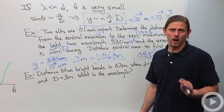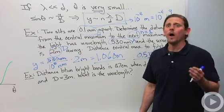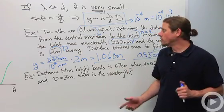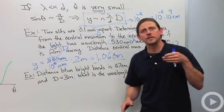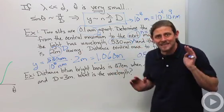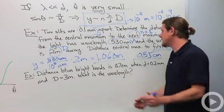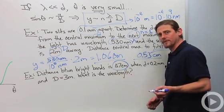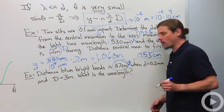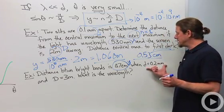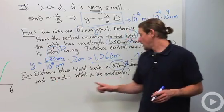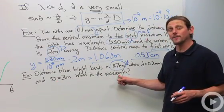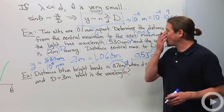Let's do the next one. This is actually what the double slit experiment is used for now, to measure wavelengths. So now we're given the distance between bright bands. We're using some sort of laser and we can see the distance between the bright bands, and we measure it as 0.7 centimeters, so this is y. It gives us d, it gives us capital D, and now we want to know the wavelength λ.